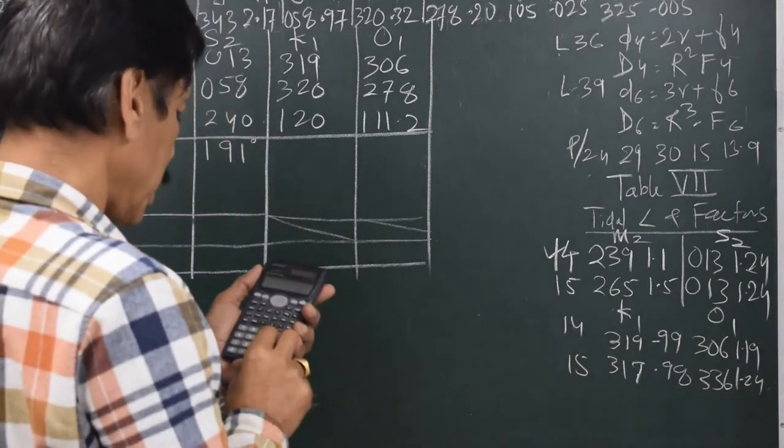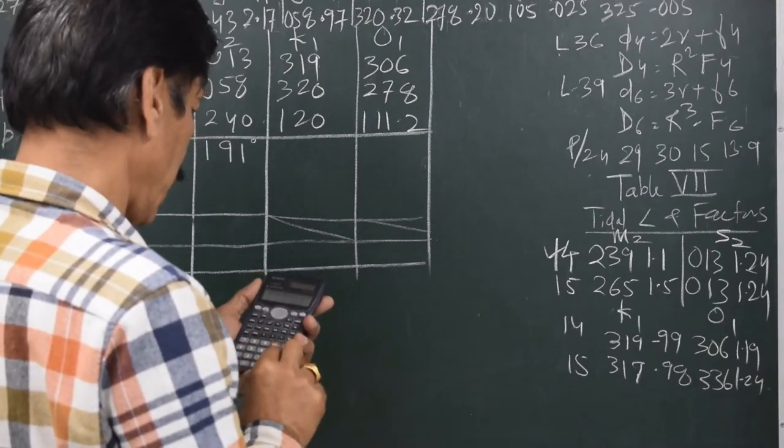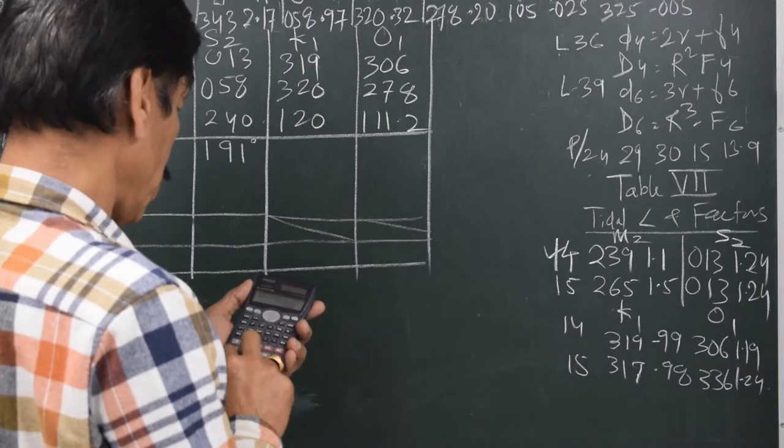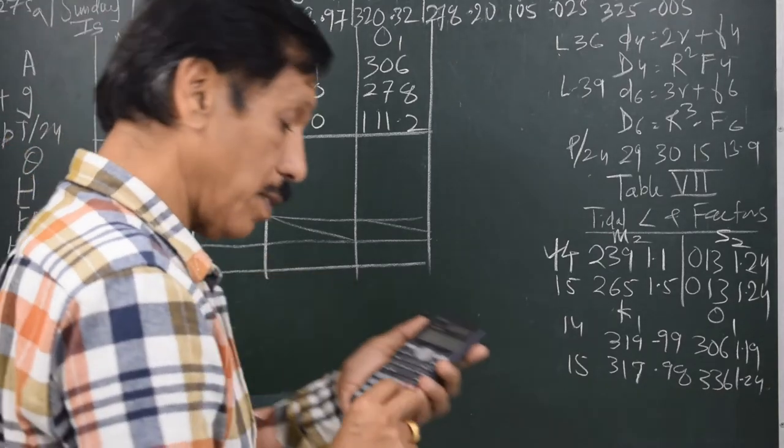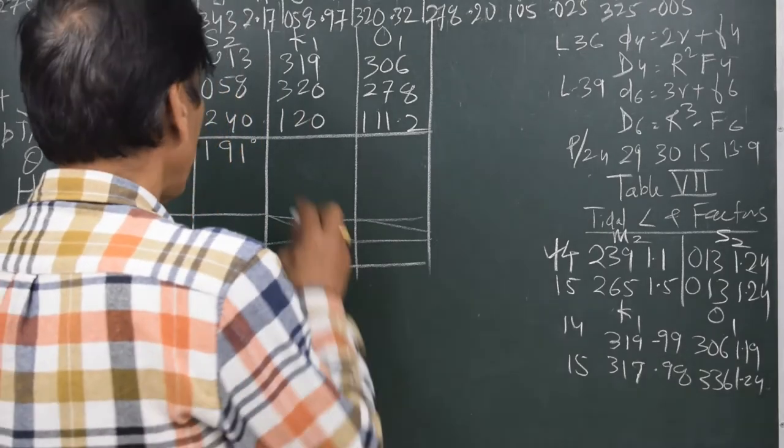Next one K1: 319 plus 320 minus 120 gives me 519. It is more than 360, so I subtract 360. I get 159.